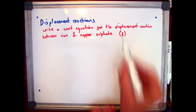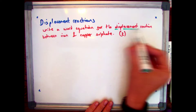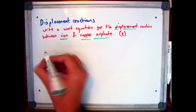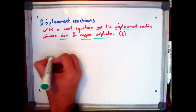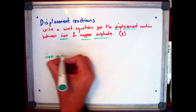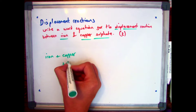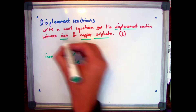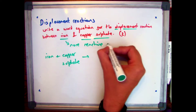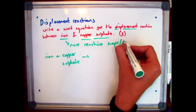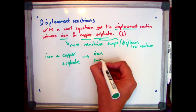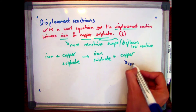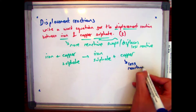Sometimes you won't get two reactants with double endings, so you'll need to look at which is the more reactive metal. Start off with the reactants: iron plus copper sulfate. Iron is the more reactive of the two metals, so you'll end up with iron sulfate and then copper on its own.